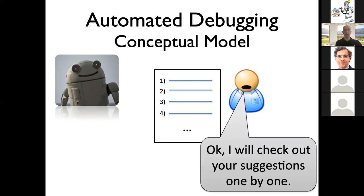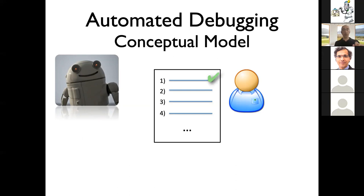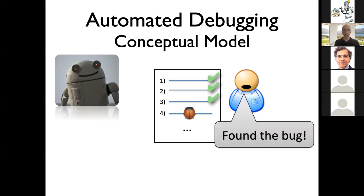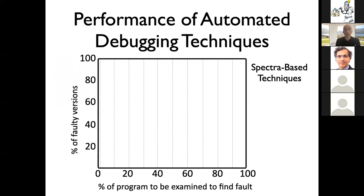Let me clarify what we're talking about: automated debugging or rank-based techniques — techniques that take a piece of buggy code, pass it to a tool, and the tool analyzes the code and provides a ranked list telling the developer which places to check. The developer goes through the list — checking the first line, no bug; second line, no bug; until they find the bug. We started asking ourselves: how does this work in practice? Looking at the evaluations, on the x-axis is the percentage of the program to examine to find the fault — you want to be as far left as possible.